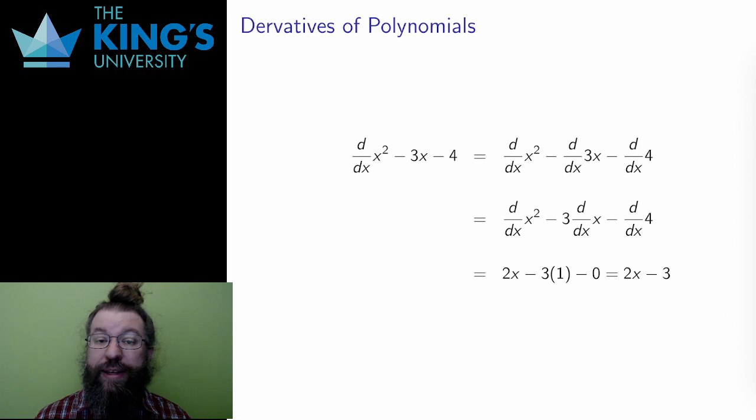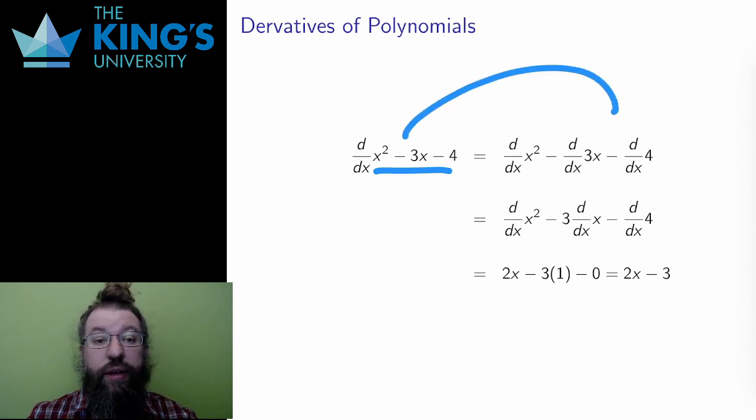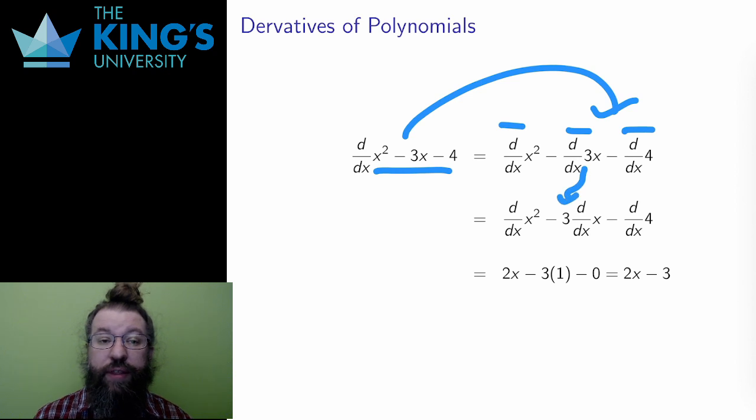The power rule and linearity lets me do all polynomial derivatives, and polynomials are the best place to demonstrate both of these rules, the power rule and linearity. So let me do an example here. I want to differentiate the quadratic x squared minus 3x minus 4. A polynomial is put together by addition and subtraction. Linearity says I can split up derivatives over addition and subtraction. So this derivative becomes three derivatives, one for each piece between the subtractions. Then linearity says I can pull out constants. This means the 3 in the middle derivative can come out of the derivative.